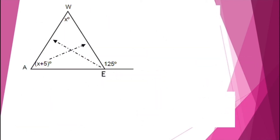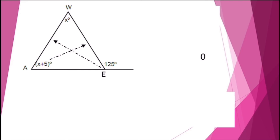For our second example, we have two remote interior angles and an exterior angle. We know that the sum of the two remote interior angles equals the degree measure of the exterior angle. Substituting, X + (X + 5) = 125 degrees, which gives us X + X + 5 = 125.